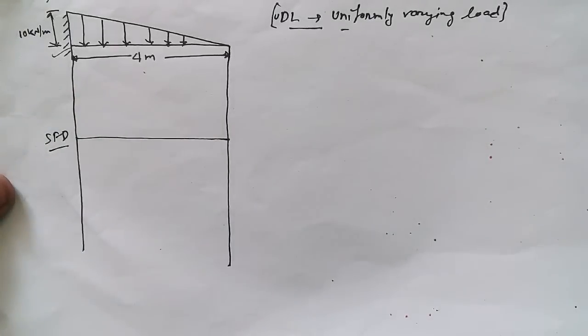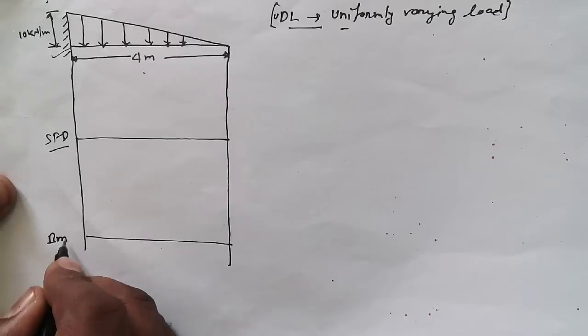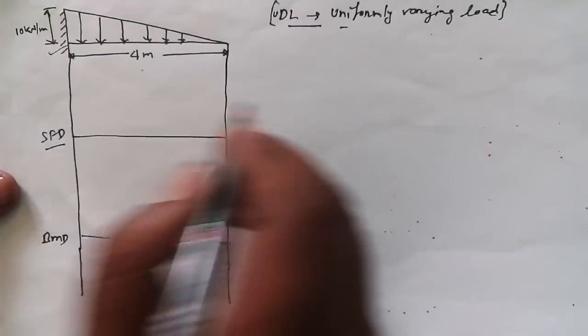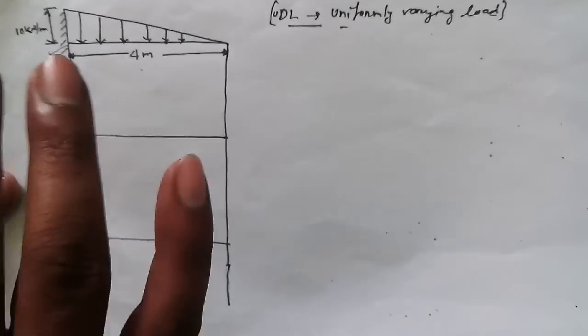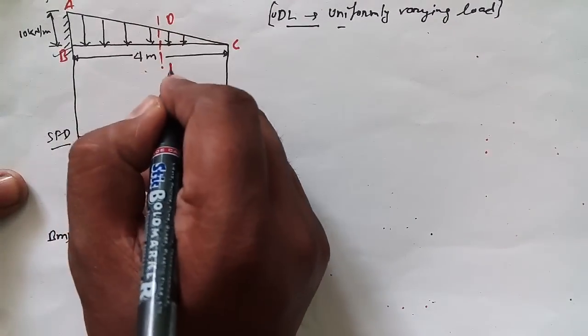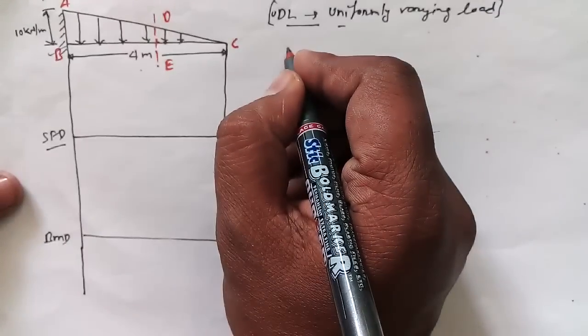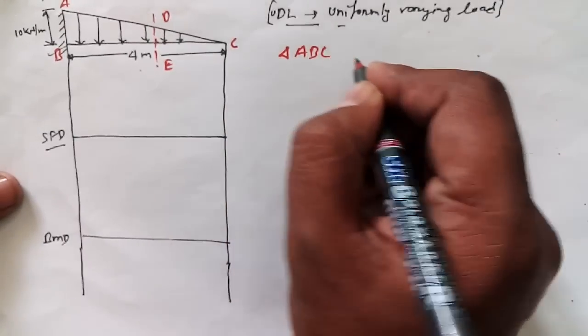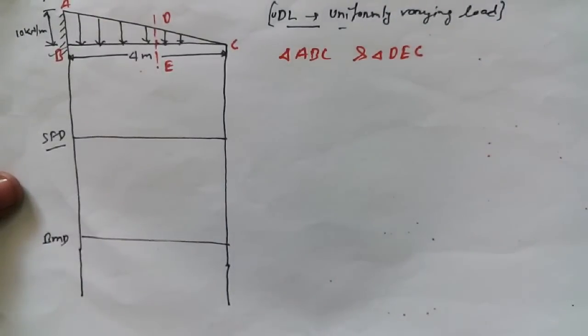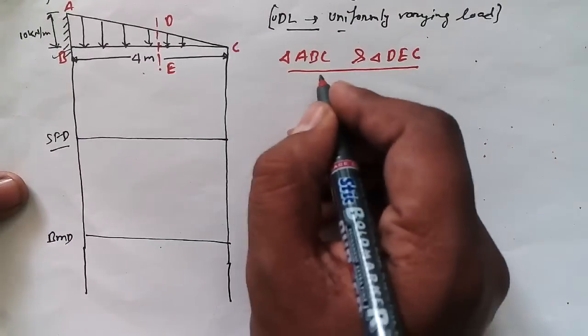We are going to draw the shear force diagram here, and below we are going to draw the bending moment diagram. Let me extend this line a little bit. Now, if you get a diagram like this for a cantilever beam, what we have to do is first separate it and name the points as A, B, C, D, and E. We are having two triangles: triangle ABC and triangle DEC.